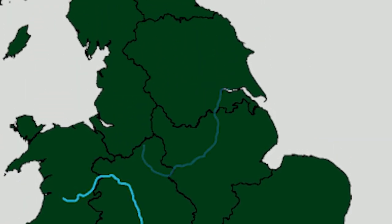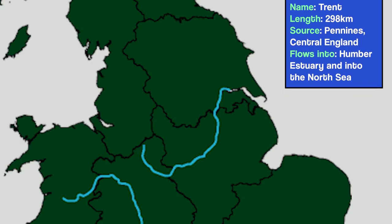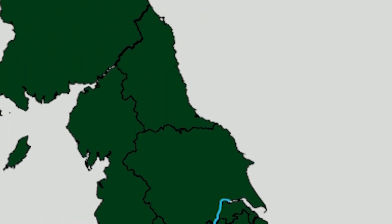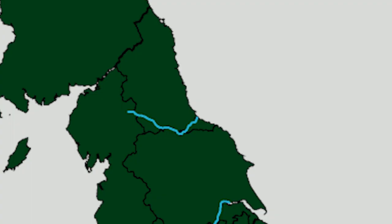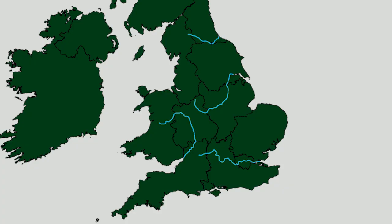Third place goes to the River Trent, a 298-kilometre-long river that begins in central England within the Pennines mountain range, and flows north-east until it joins the River Ouse. From there, the two rivers form an estuary called the Humber, which is where the rivers flow into the North Sea. Let's also give a quick shout-out to the River Tees. The source of this river is found in the northern part of the Pennines; from there it flows eastwards before emptying into the North Sea. At 137 kilometres long, it's the 29th longest river in the UK, but it gets a special place in this video because we'll be covering landforms that appear on the Tees in a future video.